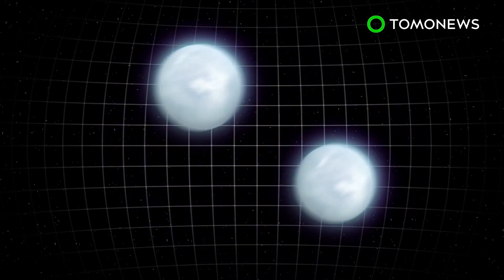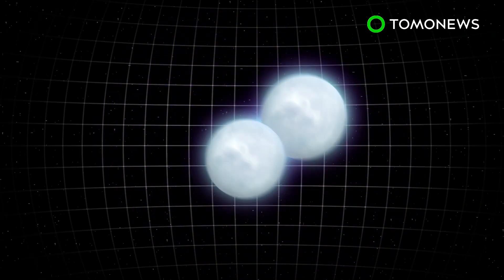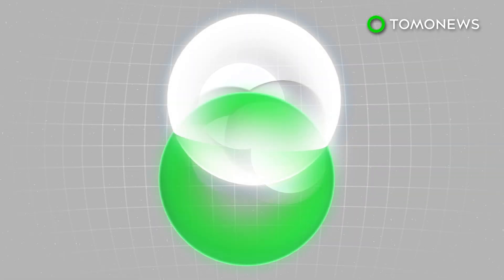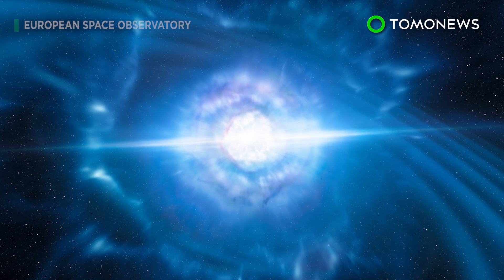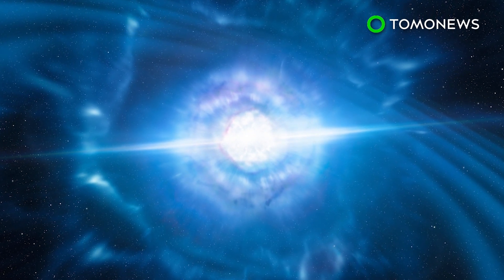It's the collision of two of these ultra-compact densities that astronomers believe emitted light and gravity strong enough to be observed on Earth. And that's a big deal, because it's the first time gravity and light have been spotted coming from the same cosmic event.